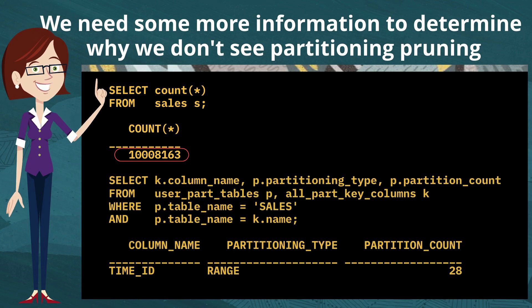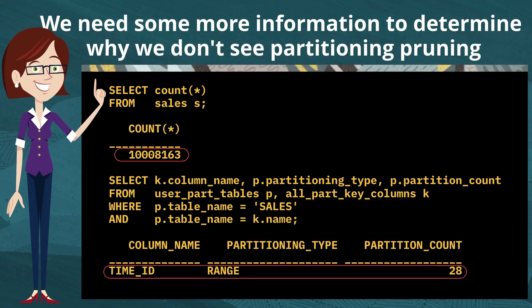Then I want to join user_part_tables and all_part_key_columns to find out the partitioning strategy. So it looks like we're range partitioned on that time_id column used in the where clause, and we've got 28 partitions.